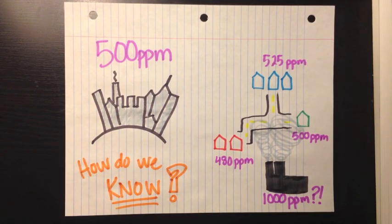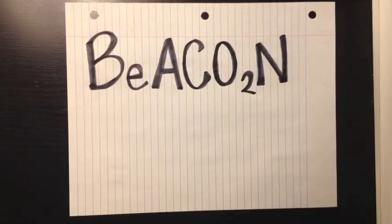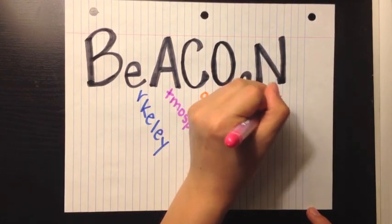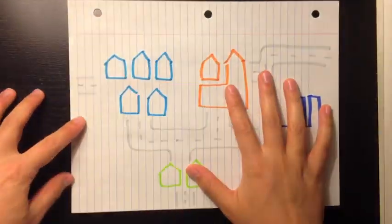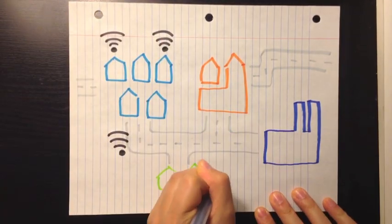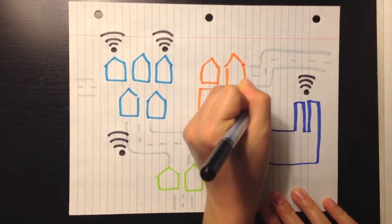So here's where my research comes in. I use something called BEACON, the Berkeley Atmospheric CO2 Observation Network. BEACON is made up of a system of many smaller, cheaper sensors that give me minute-to-minute information on CO2 concentrations down to the kilometer.